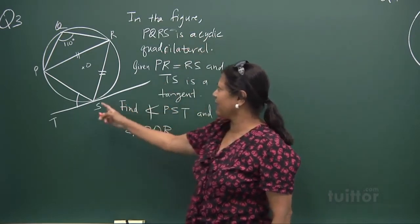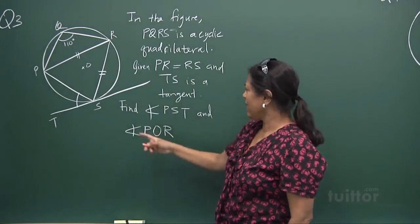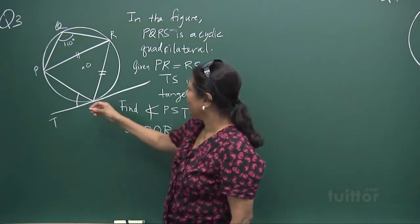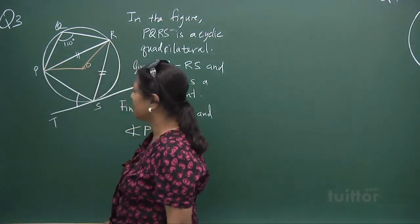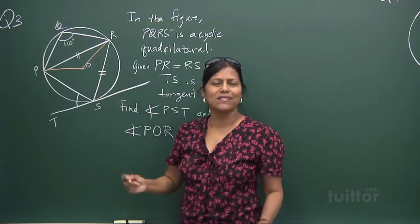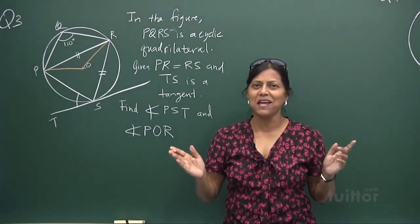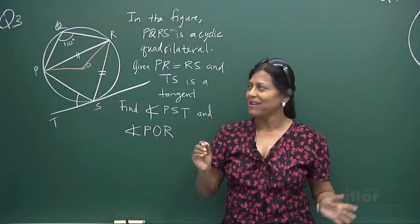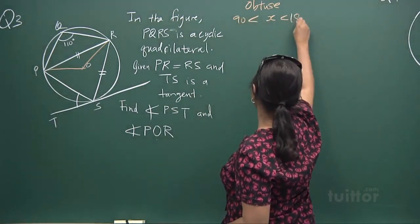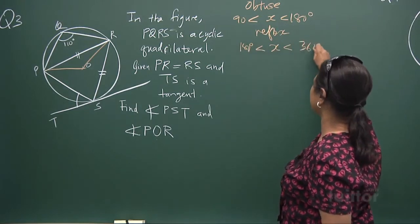PQRS is a cyclic quadrilateral, PR equals RS, TS is a tangent, and we have to find angle PST and angle POR. Since they didn't specify whether it is the reflex angle or the obtuse angle — an obtuse angle is between 90 and 180 degrees, and a reflex angle is more than 180 but less than 360 degrees.